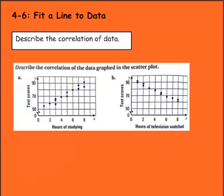Let's take a look at these scatter plots. It says describe the correlation, or the relationship, of the data graphed in the scatter plot. So here we have hours studying on the x-axis, test scores on the y-axis. What is the relationship between the x-axis and the y-axis? Well, we see that the longer people are studying here, the higher the y-axis is going, which is test scores.